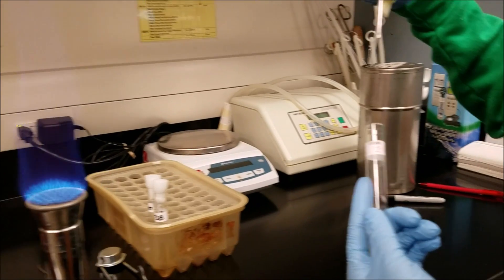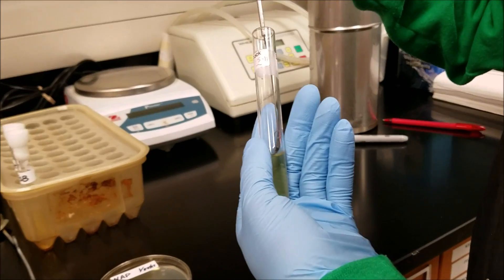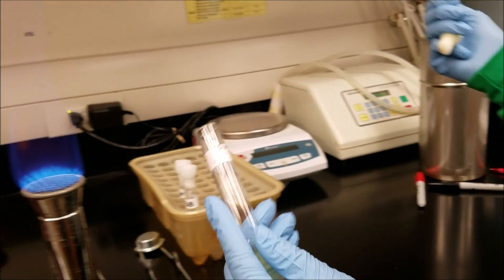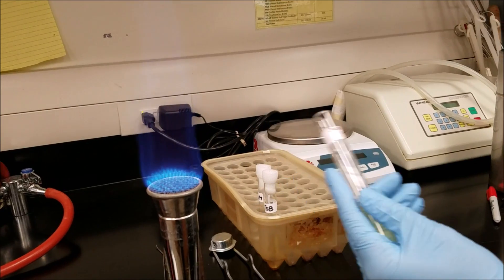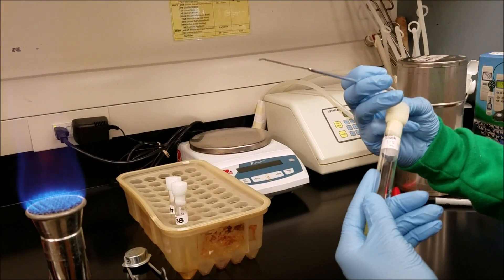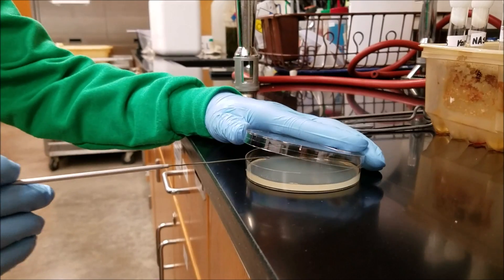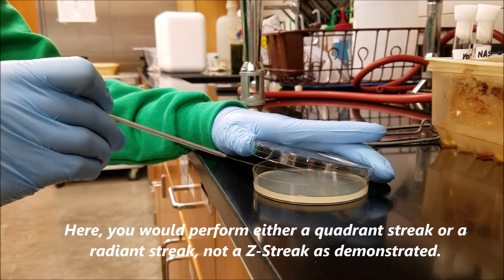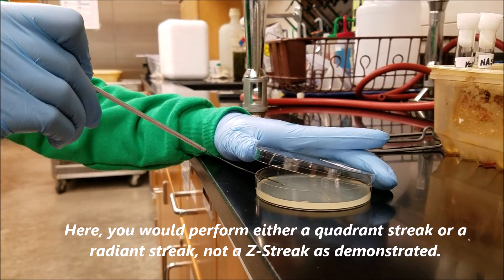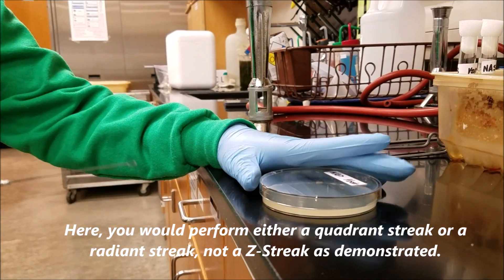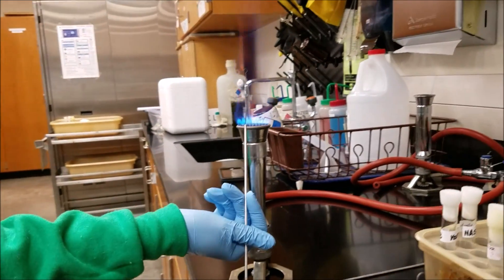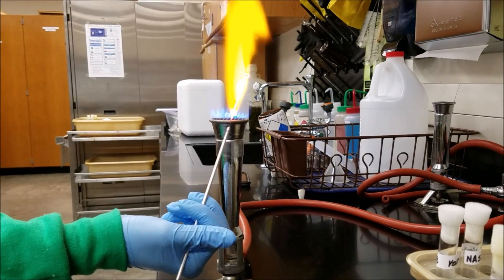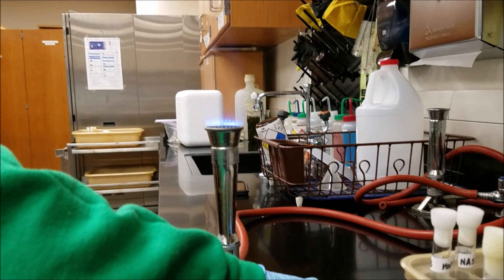You're going to do the same procedure, flaming the loop, removing the stopper, flaming the rim, and swirling out the bacteria from your stock solution. You're still going to flame the rim as well, replace the stopper, and you're going to be done with that test tube. You're going to slightly raise the lid of the plate, a half an inch, an inch at the most. And you're going to zig-zag the motion or whatever type of streak that you've learned. Flame your loop and you're done.